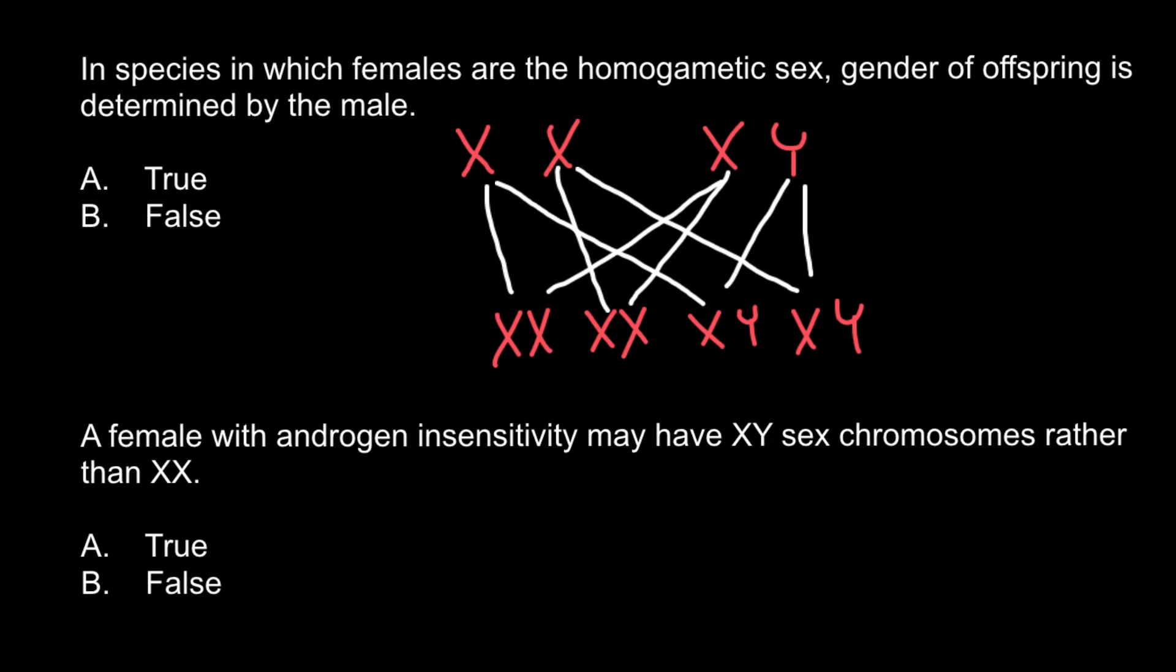This is XY sex determination system. In this system, male sperm can be of the two kinds, whereas in the gametes there can be X chromosome or Y chromosome. So male sperm determines the sex of the progeny.